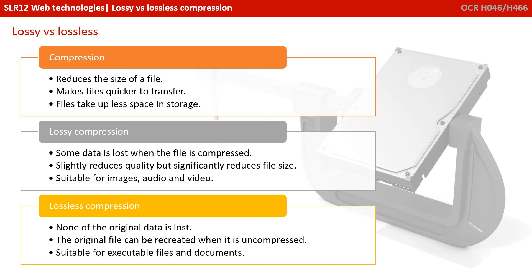So let's summarise: lossy versus lossless. Compression reduces the size of the file, makes it quicker to transfer, and takes up less space. With lossy compression, some data is lost and can't be recovered when the file is compressed. It slightly reduces the quality but significantly reduces the file size, and this is very suitable for image, audio, video and other types of multimedia. With lossless compression, none of the original data is lost, so the original file can be recreated exactly when it's uncompressed. This makes it suitable for executable programme files and text-based documents.